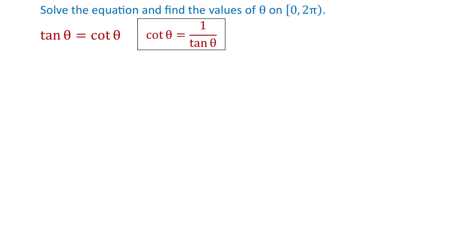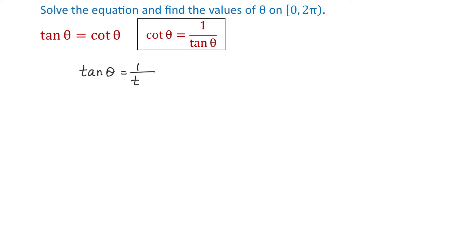To solve this equation we will use the reciprocal identity: cotangent of theta equals 1 over tangent of theta. So on the right side we will replace cotangent of theta with 1 over tangent of theta, giving us tangent of theta equals 1 over tangent of theta.